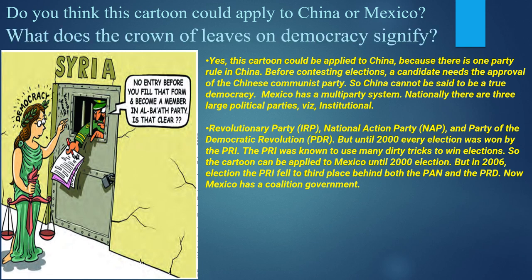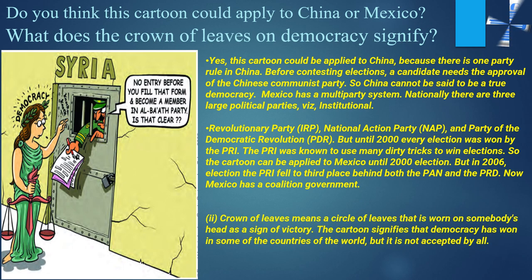Question 2: What does the crown of leaves on democracy signify? The crown of leaves signifies symbolic democracy — the constitution speaks of democracy, but through the democratic process only one party rules by adopting tactics to keep the opposition away from becoming the rulers.